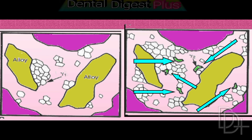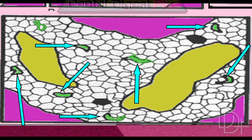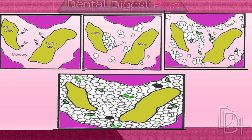Later on there will be formation of gamma-2 crystals, and after the reaction completes, gamma, gamma-1, and gamma-2 phases are found in the set amalgam. The physical properties of the hardened amalgam depend on the relative percentages of each of the microstructural phases. The more unconsumed silver-tin particles that are retained in the final structure, the stronger the amalgam.